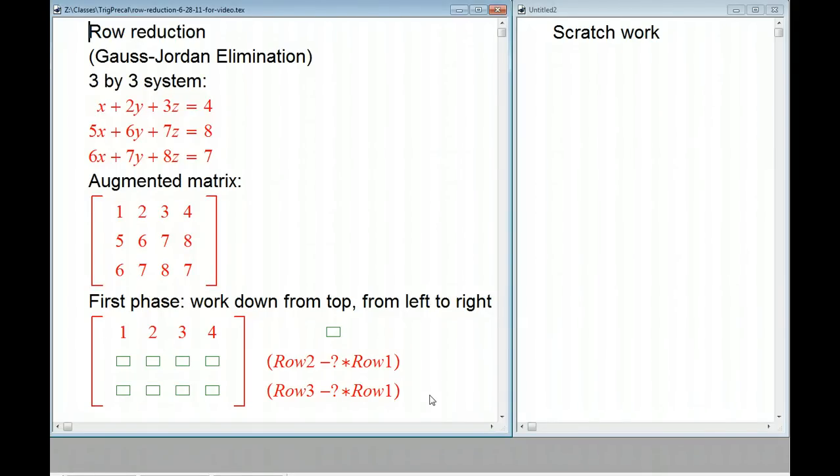This is continuing row reduction and Gauss-Jordan elimination. This is a re-record of earlier videos. The other video showed what happens when you get a unique solution, and I want to show the other two cases. Here's the 3x3 system with three equations and three variables, and you get this augmented matrix. A little quicker than I did last time, we're going to do the Gauss-Jordan elimination and see what happens.